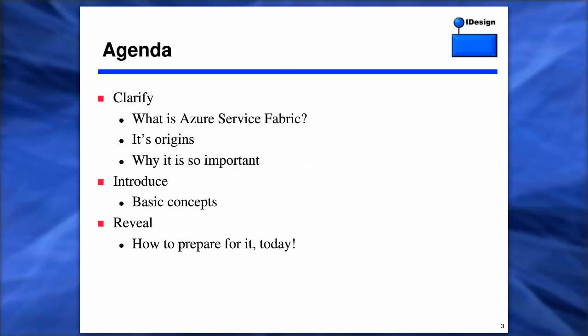Today, I'm going to clarify for you the value proposition of the fabric. We're going to talk briefly about what the fabric is, then explore its origins, because its origins are very relevant to what you're all experiencing right now trying to build modern software systems. Then we'll dive more deeply into why this particular technology is so important. Along the way, we're going to touch on basic concepts and give you a foundational introduction to the way the fabric works. And finally, we're going to introduce how you can actually prepare for it today.